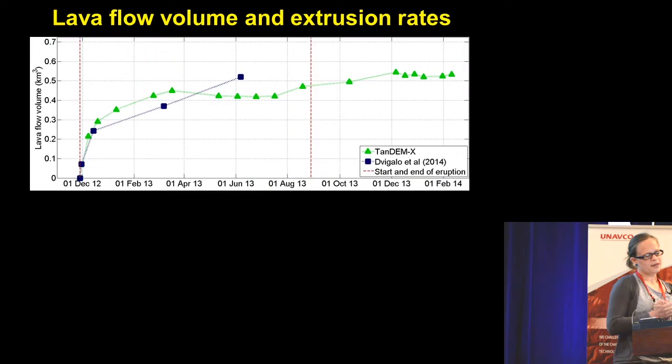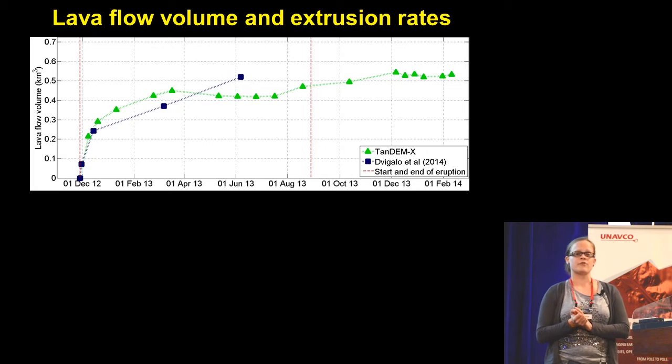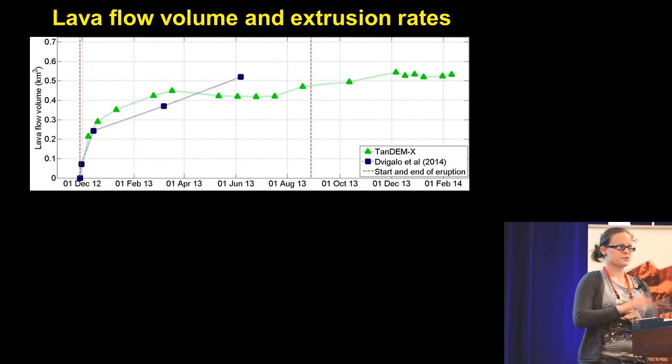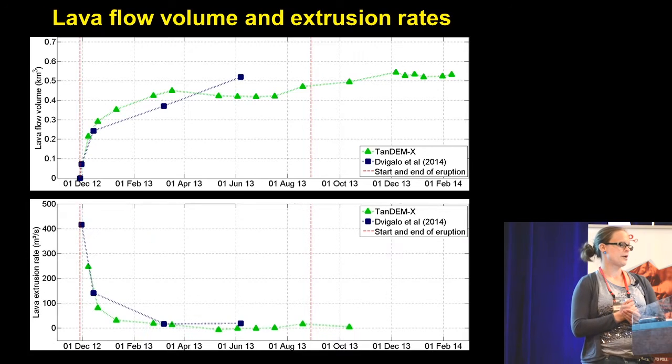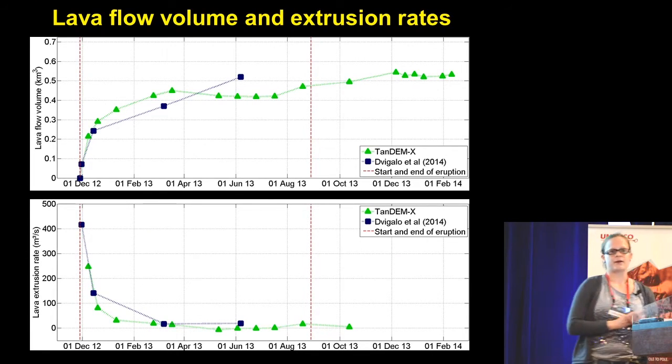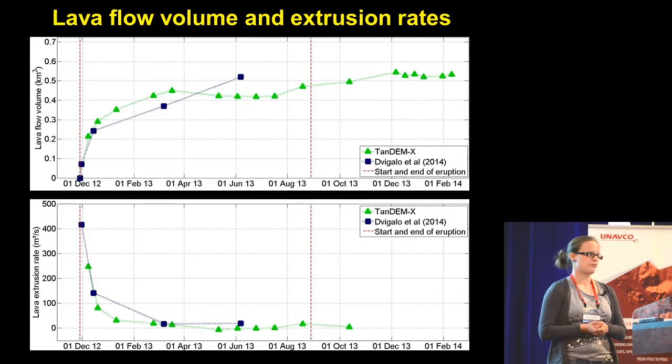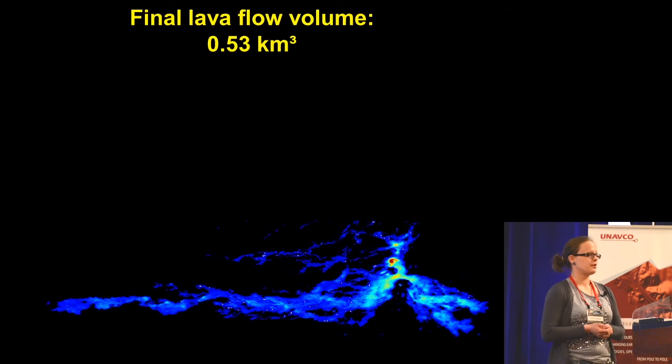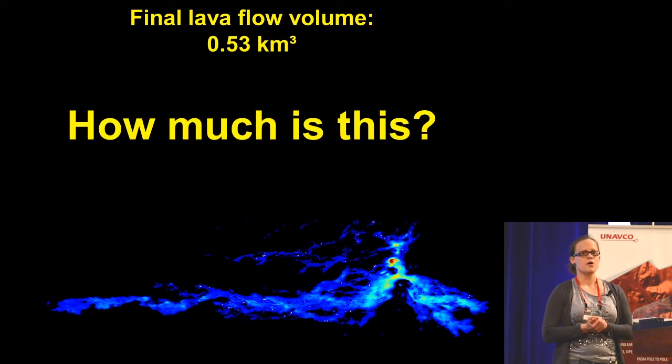You can see here the lava flow volume and extrusion rates that were measured over time. This is the lava flow volume compared to other imagery, and here the lava extrusion rates. That's a very good value for volcano research, but my final volume was 0.53 cubic kilometers, and I really have no idea what this means. How much is this?